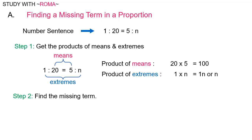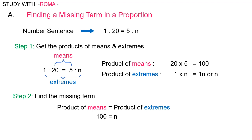Step 2: Find the missing term. The product of means must be equal to the product of extremes. Therefore, 100 is equal to n, or we can write it as n equals 100.